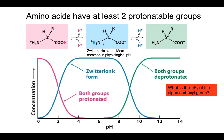In the zwitterionic state, the alpha-amino group is protonated and therefore positively charged, while the alpha-carboxyl group is deprotonated and therefore negatively charged. If you take a look at the concentrations of each one of these forms — this is glycine, for example — you have the form where everything is protonated, where one group is deprotonated and the other is protonated, and where everything is deprotonated.